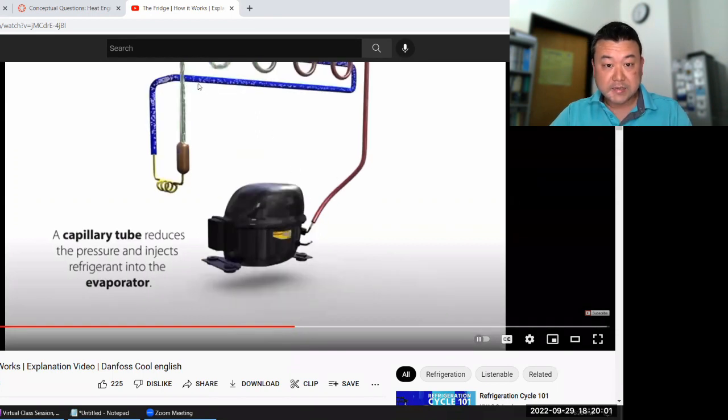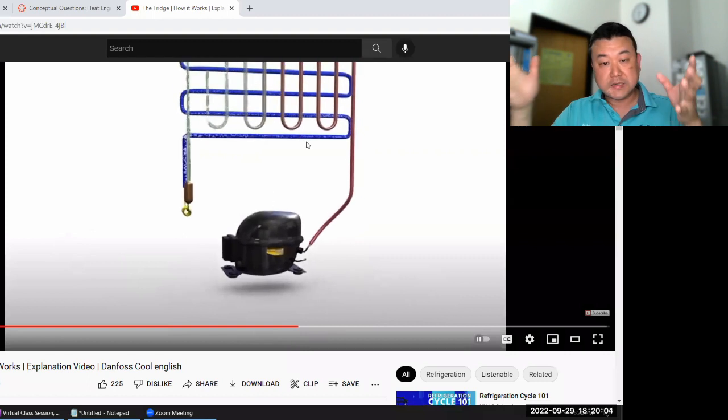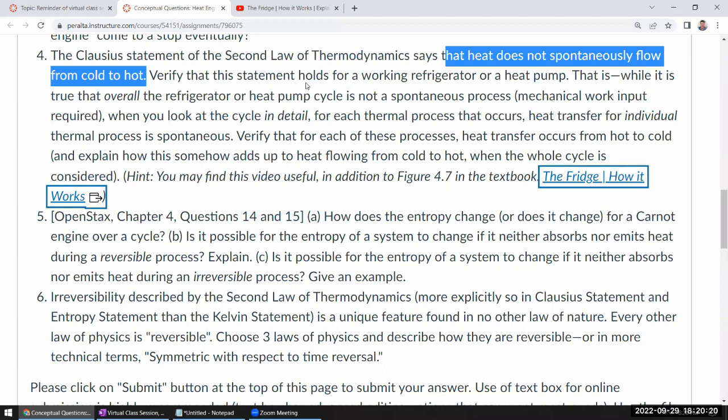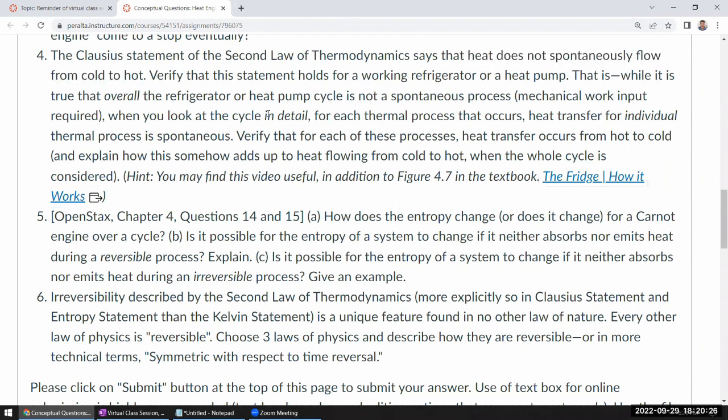This colder fluid that's now inside the refrigerator, heat flows from inside the refrigerator, which is cold but not as cold as this fluid, into this colder fluid. On that step of heat transfer as well, heat flows from hotter to colder. So that's what this question is getting at. When you look at the operation of a refrigerator or heat pump in detail, at any time there's a heat transfer, they do flow from hot to cold. It's just that in these devices, there's something that does mechanical work to change temperature without there being heat transfer, adiabatic expansion and adiabatic compression. That's really what this is getting at.